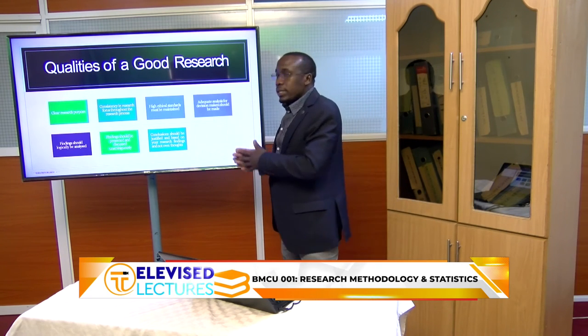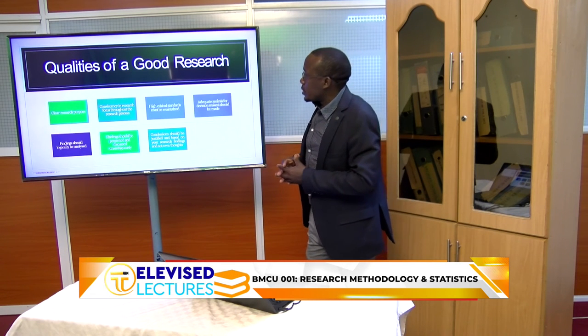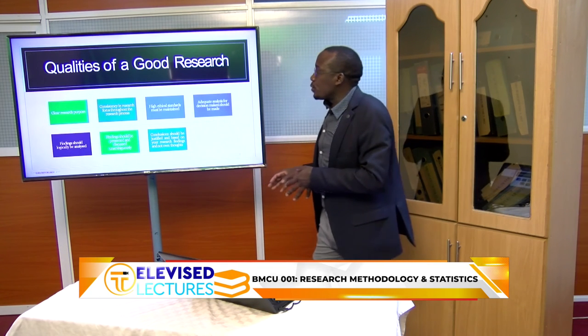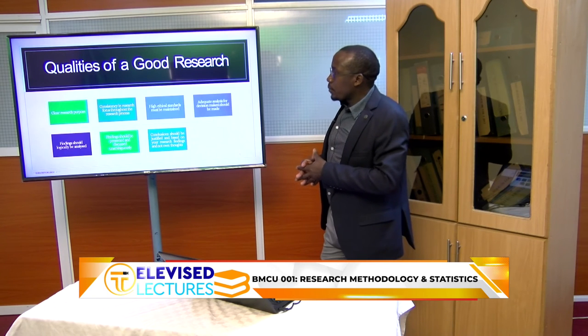Our next discussion is about what you are supposed to do when you want to choose a research topic. I have already covered what research is, its characteristics and tenets, and the qualities of a good research process. Now, we also need to understand what qualifies a good research title in academia. When choosing a research topic, please do not forget that what precedes any research process is the research problem — if your research problem is not well articulated and supported, there is no basis to proceed with that research.